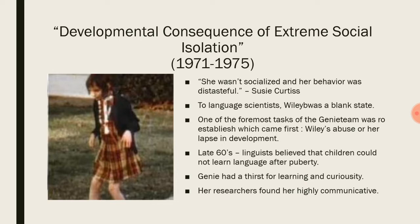To language scientists, Genie was a blank slate. One of the foremost tasks of the Genie team was to establish which came first: was it Genie's abuse or her lapse in development? The scientists were trying to determine whether her developmental delay was a symptom of her abuse or a born challenge. Up until the late 1960s, linguists believed that children could not learn language after puberty, but Genie disproved this. She had a thirst for learning and curiosity, and her researchers found her highly communicative. However, grammar and sentence structure were another thing entirely.